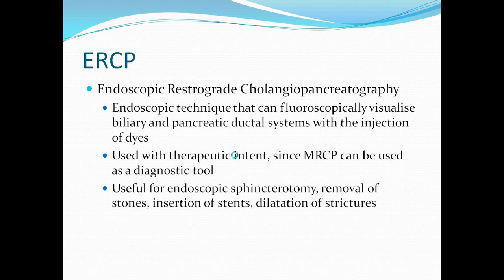An ERCP is an older test still used with therapeutic intent, since you can actually go in and remove stones using your scope. This involves insertion of a scope down the esophagus, down the stomach to the duodenum. You can fluoroscopically visualize the biliary and pancreatic ductal systems with injection of dye. This can also be used for endoscopic sphincterotomies, removal of stones, insertion of stents, and dilatation of strictures, which are often useful in cases of cancer.